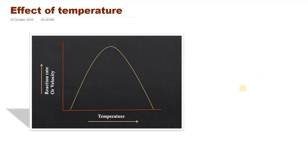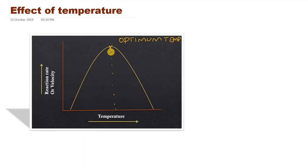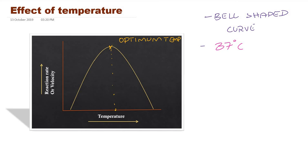Effect of temperature. As the temperature increases, the rate of enzyme catalyzed reaction increases and a point is reached — this is called the optimum temperature. On the x-axis we have increasing temperature and on the y-axis we have velocity. This particular enzyme has maximum activity at the optimum temperature. The effect of temperature also produces a bell-shaped curve. Most enzymes in our body have an optimum temperature of around 37 degrees centigrade, which is our body temperature.